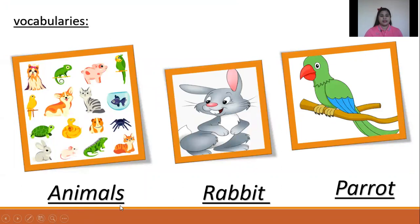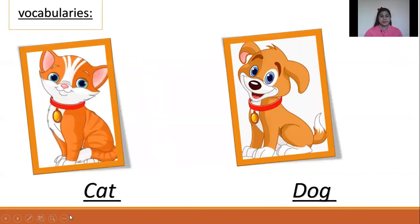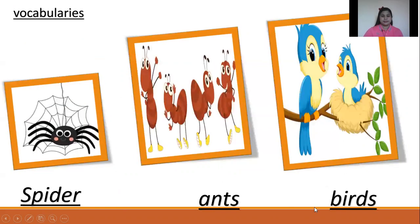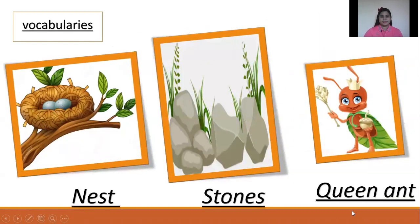Vocabularies. Animals: Rabbit. Parrot. This is the parrot and this is the rabbit. Cat. Dog. Spider. Ants. Birds. Nest. Stones. Queen Ant. This is an ant.